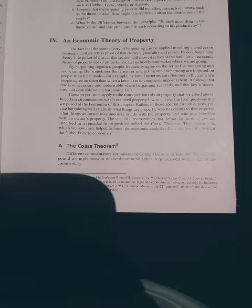Let us briefly summarize where we are going. By bargaining together, people frequently agree on the terms for interacting and cooperating. But sometimes the terms of interacting and cooperating are imposed on people from the outside, for example, by law. The terms are often more efficient when people agree on them than when a lawmaker or conqueror imposes them. It follows that law is unnecessary and undesirable where bargaining succeeds, and that law is necessary and desirable when bargaining fails.